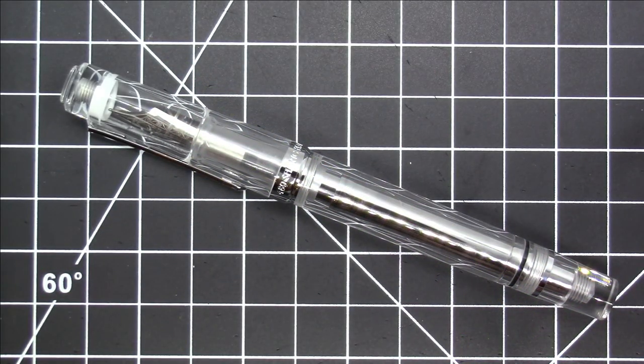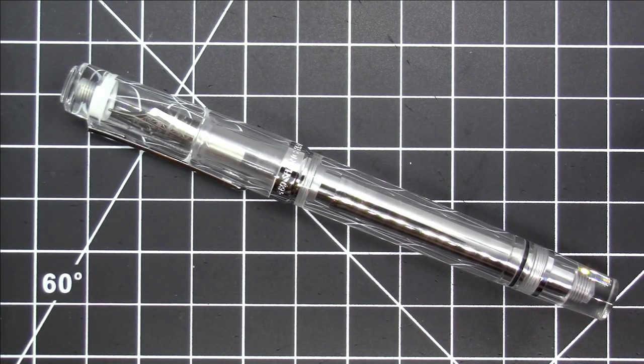Greetings pen pals, here we go. Pen BBS 489. This is yet another filling mechanism from Pen BBS. It's a new filling mechanism for Pen BBS called the touchdown filler. It is by far not a new filling mechanism for the fountain pen world as a whole.